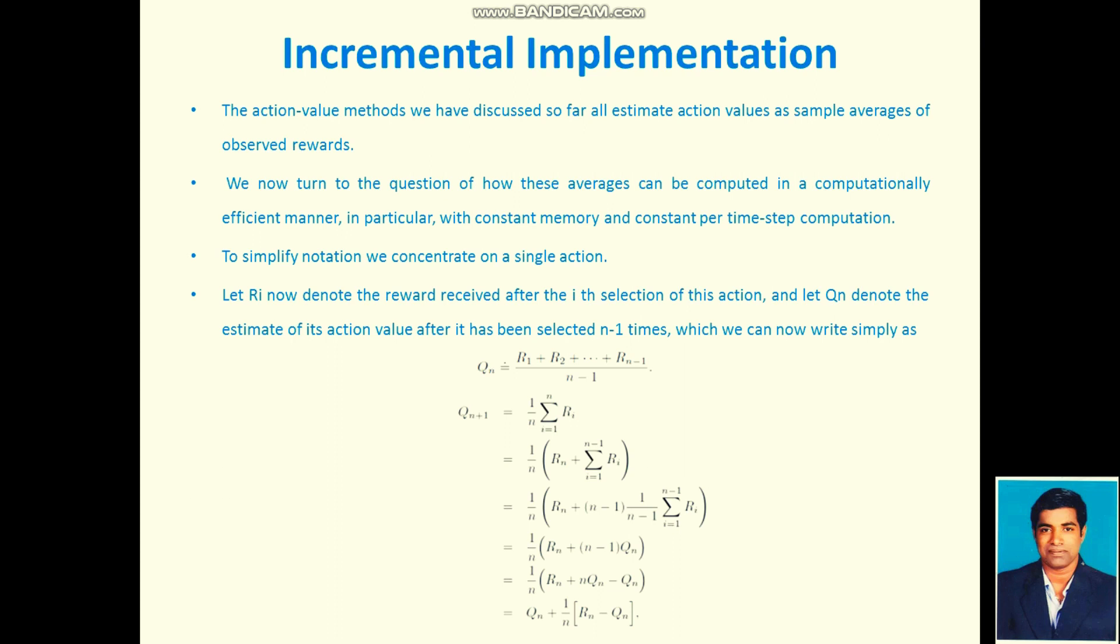We can rewrite in expanded format: 1 by n of rn plus, I am multiplying and dividing n minus 1. So I am dividing Ri by n minus 1, and multiplying by n minus 1. Now I am getting 1 by n of rn plus n minus 1 times Qn.